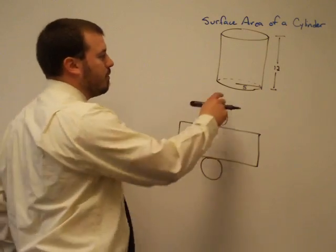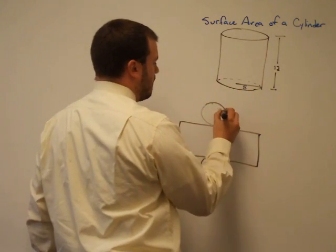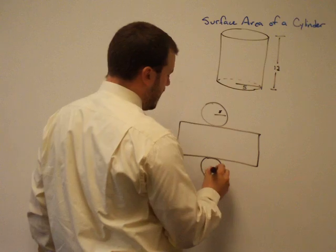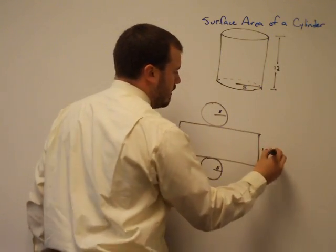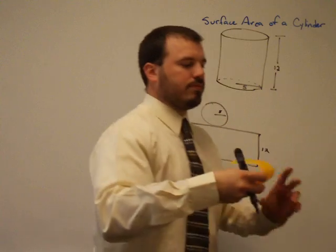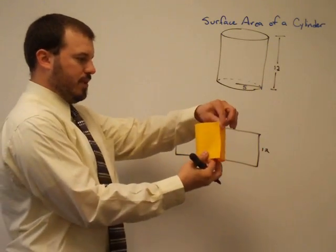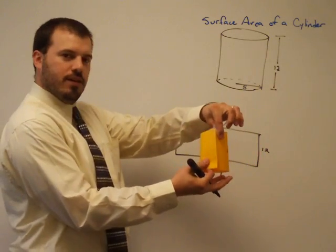So we've got our dimensions listed. I've got a radius of this circle is 5. Well, that radius transfers over to the net as well. And the height of the cylinder is 12. The height of the rectangle is the same as the height of the cylinder.